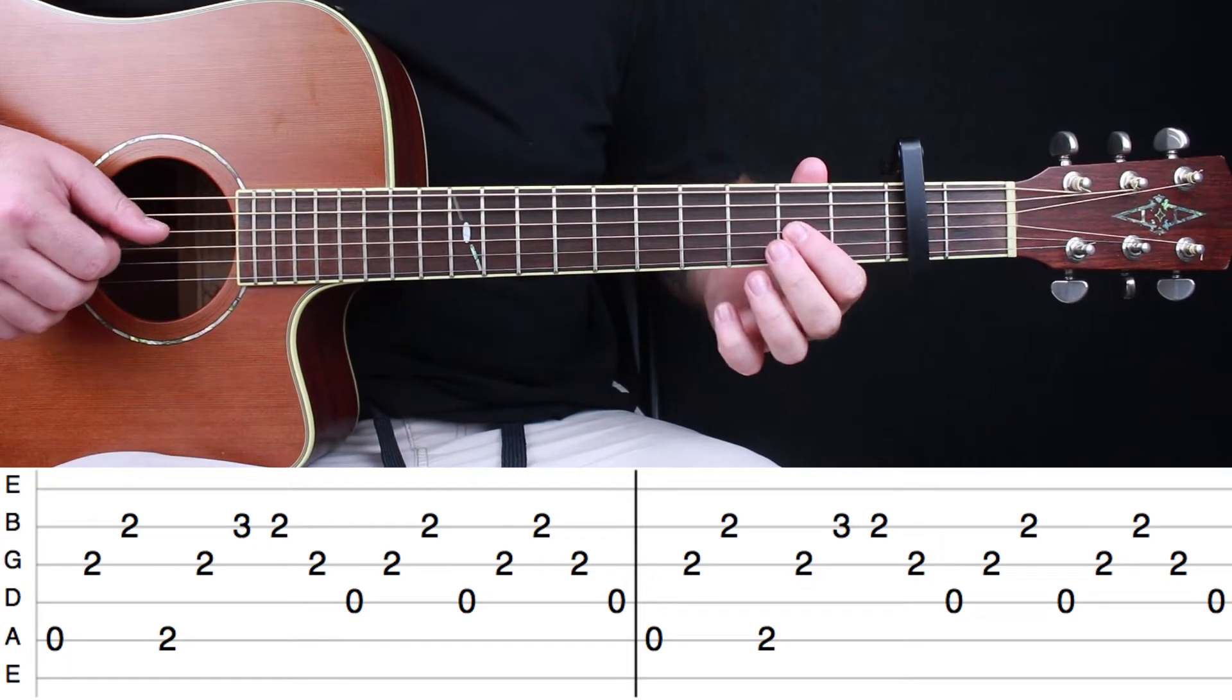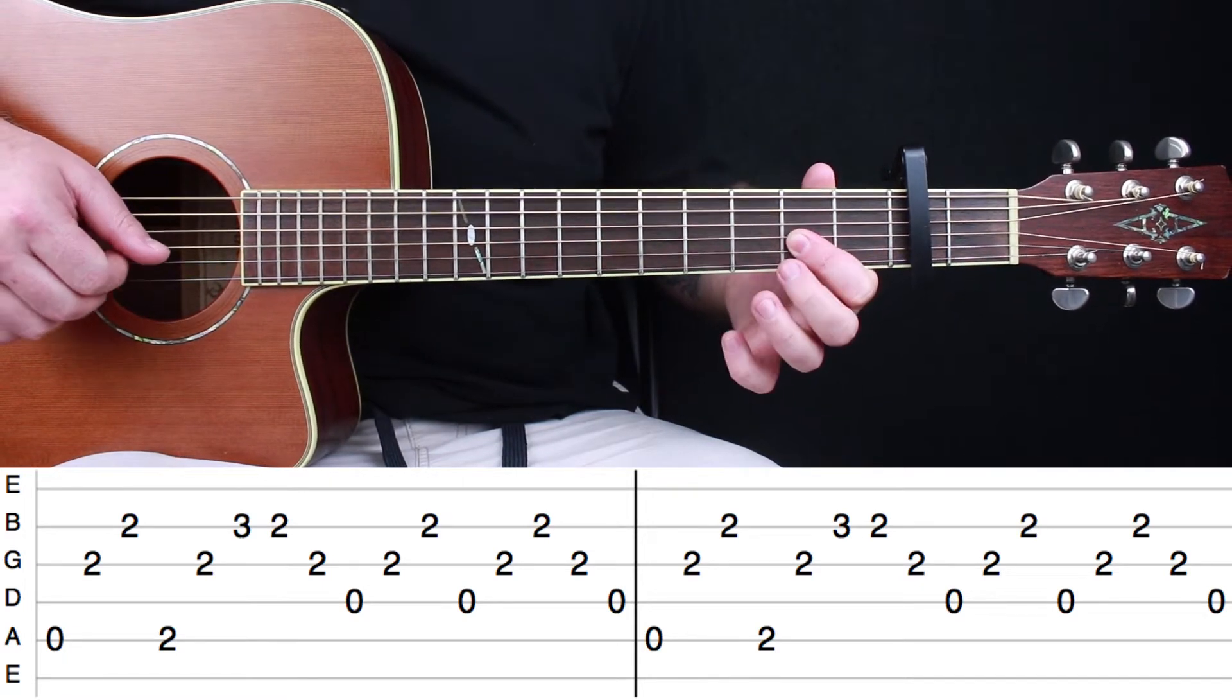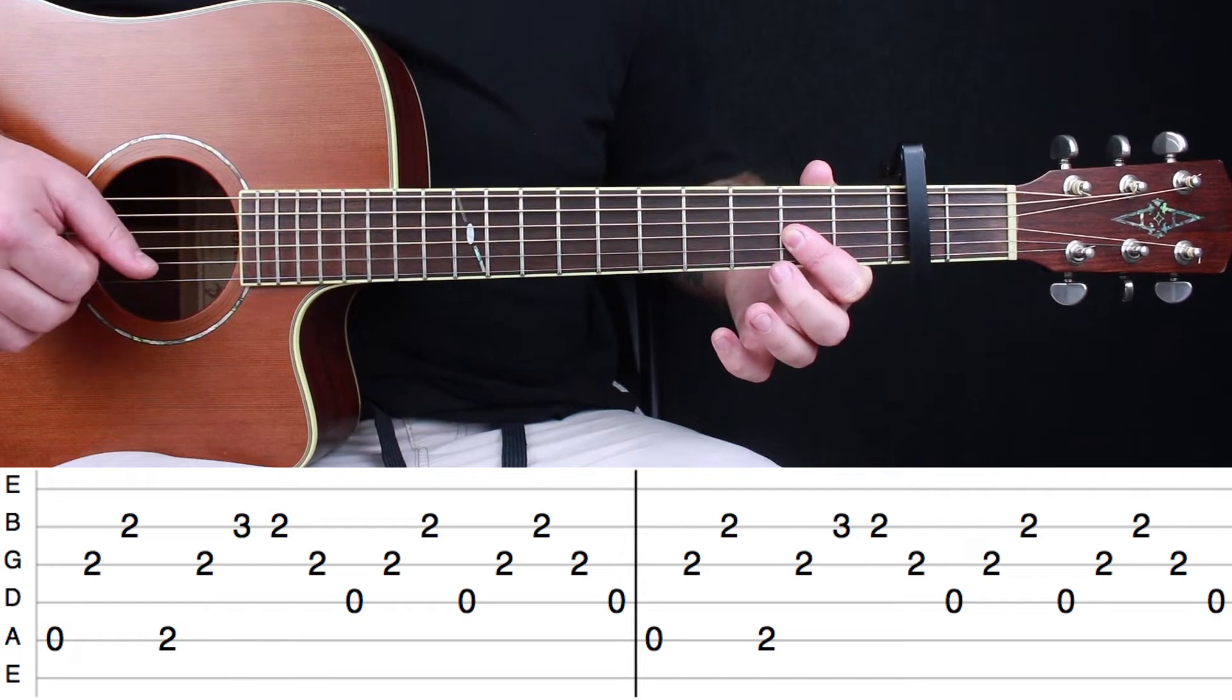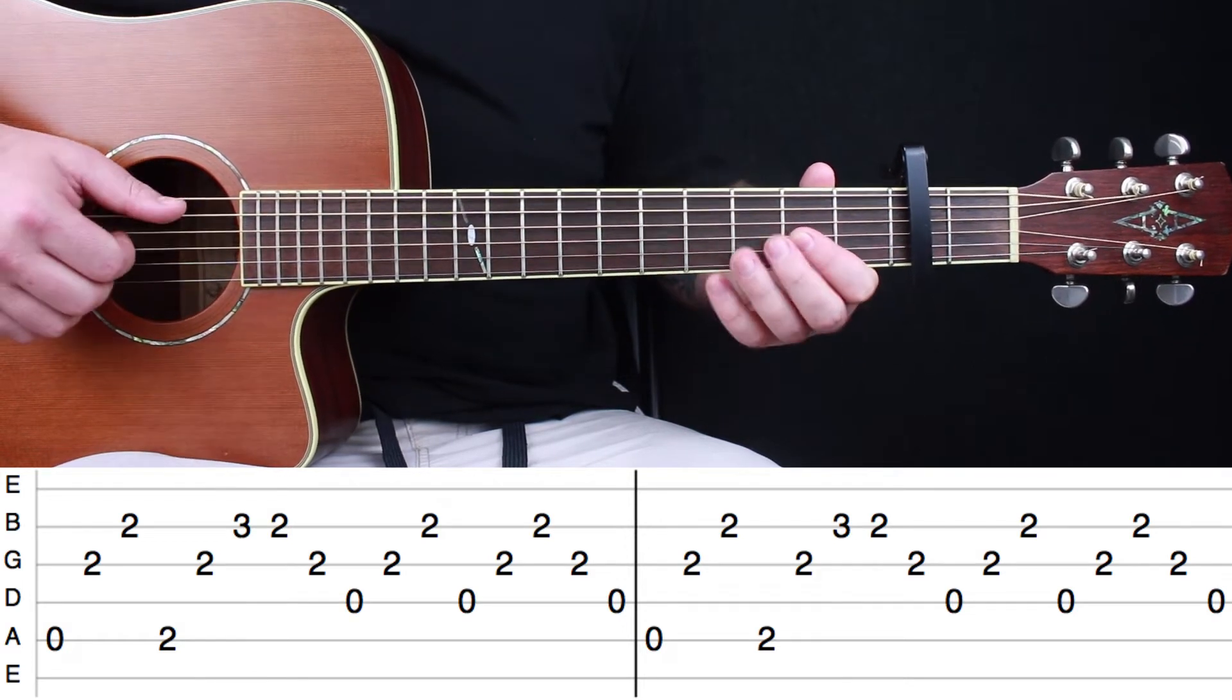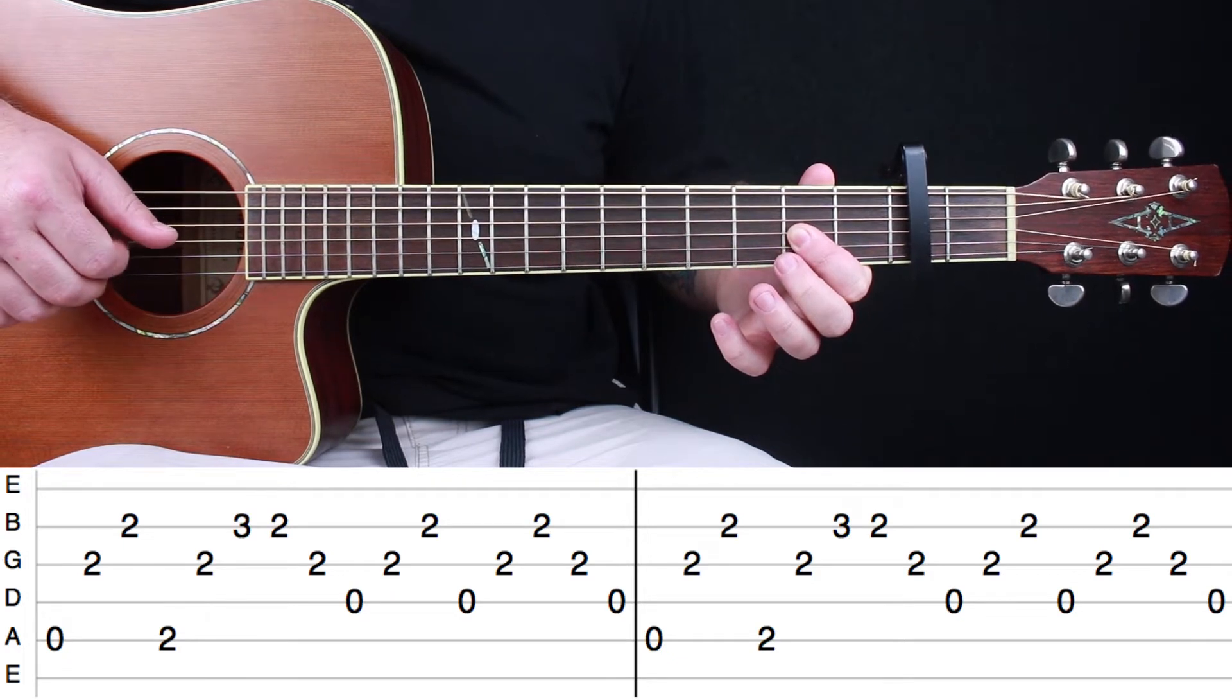This riff just repeats throughout the entire song. All you're going to do is use your index finger to bar the G string and the B string on the second fret, and you're going to leave them there the entire time. Start by picking the A string, then pick the G string and the B string.